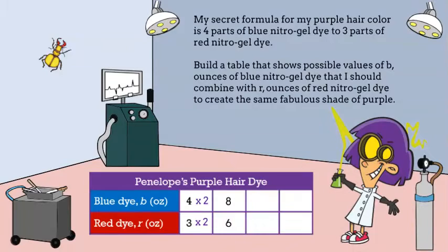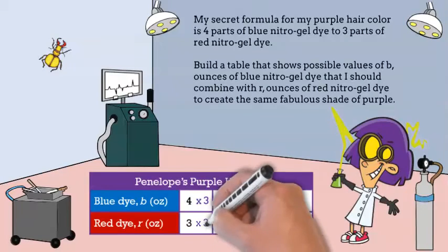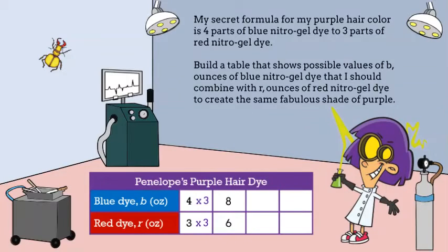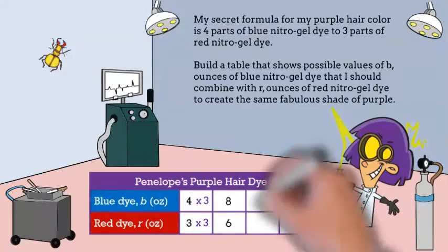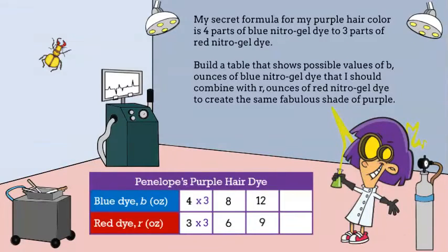If we want to continue, we go back to our initial ratio and multiply the numerator and denominator by three. That's right — you get 12 over nine.